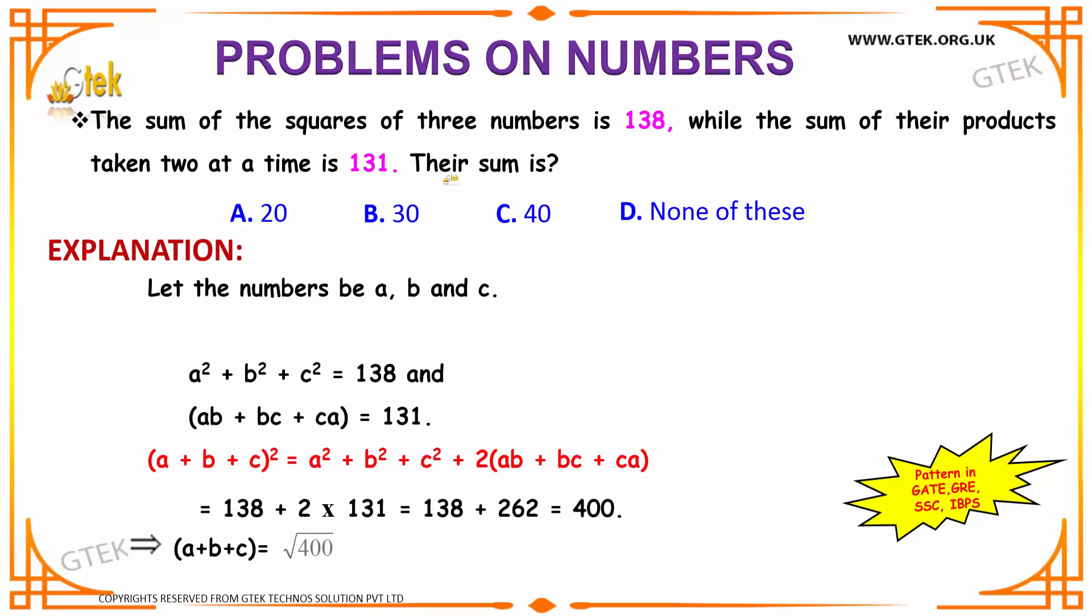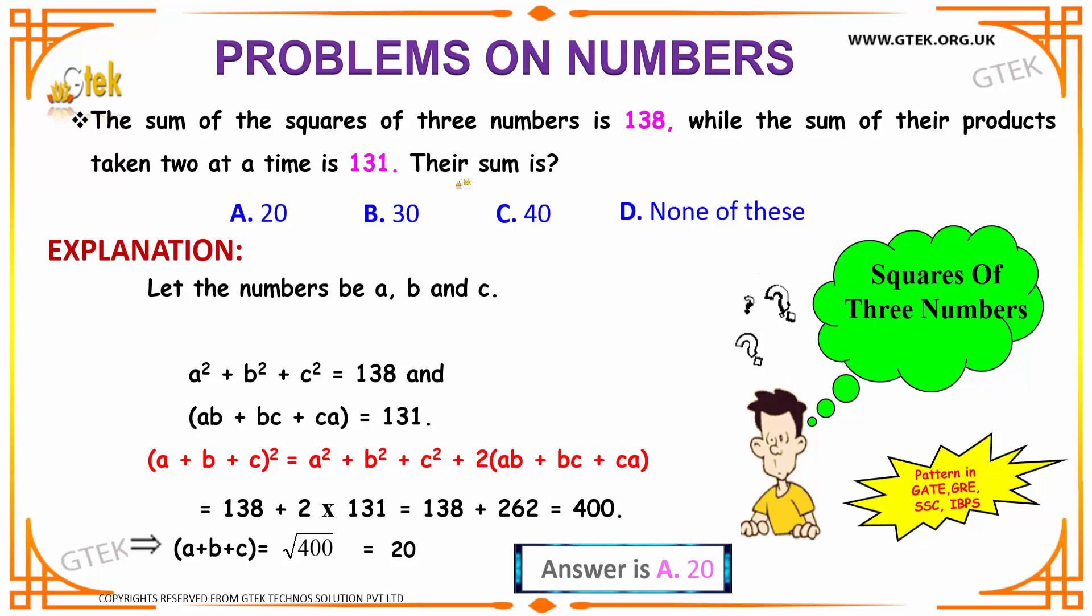Next example, we have the sum of the squares of three numbers to be 138, while the sum of their products taken two at a time is 131. So what will be the sum?